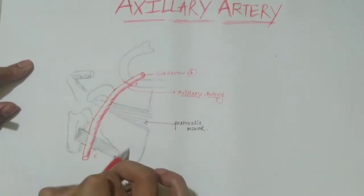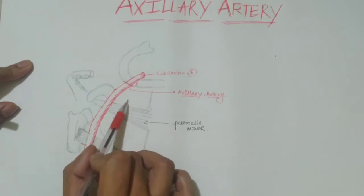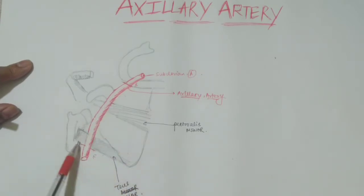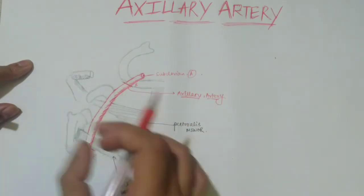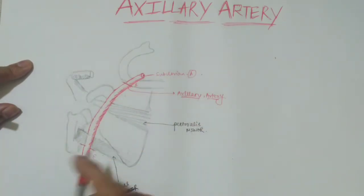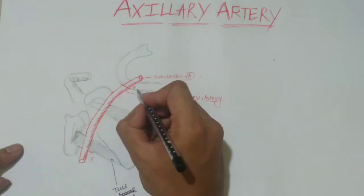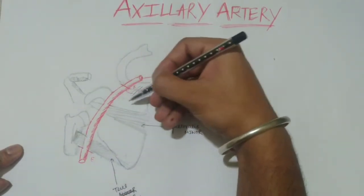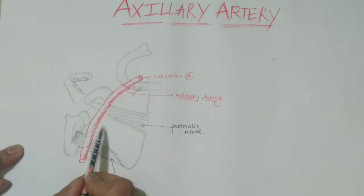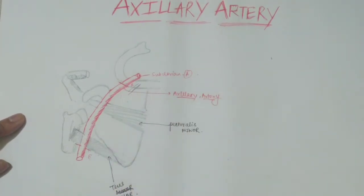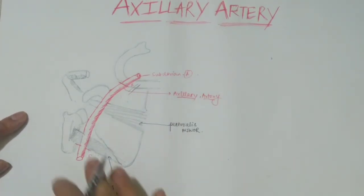The segments can also be classified based on triangles in the axillary region. The first segment lies in the clavipectoral triangle, the second segment in the pectoral triangle, and the third segment in the subpectoral triangle. Regarding topography, the axillary vein runs just medial to the axillary artery, and the posterior cord of the brachial plexus lies just posterior to the axillary artery.